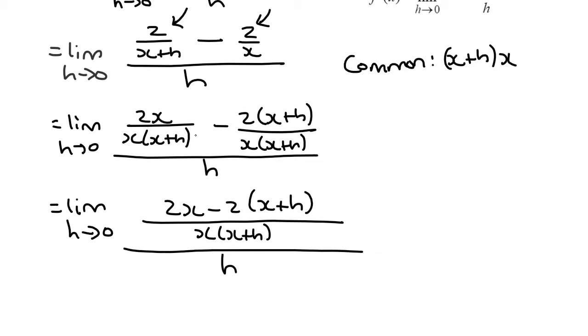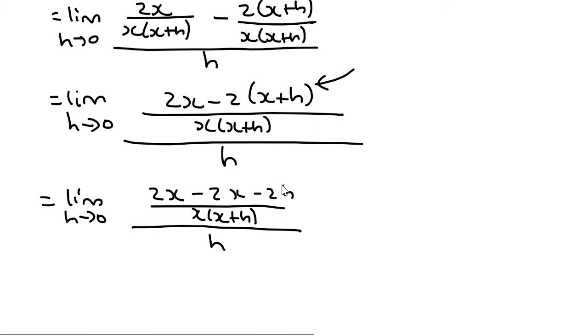Okay, so all I did in that step was I combined these, because they now have the same denominator. Now what we do is we simplify this top part. And so that's going to be limit as h goes to zero. And that's going to give us 2x minus 2x minus 2h over x, x plus h. And then that is all over h.